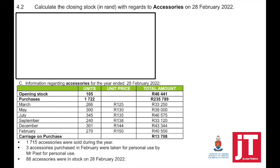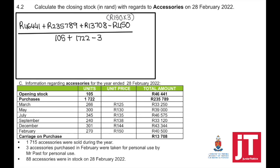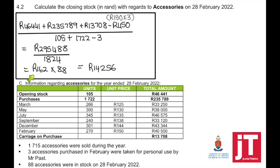For Question 4.2, to calculate closing stock in rand for accessories on 28th February, we use the weighted average price. The formula is: opening stock plus purchases plus carriage on purchases, minus the 3 accessories taken for personal use by Mr. Past — this gives us the average price. We then multiply by the 88 units left over to get the total value of closing stock.